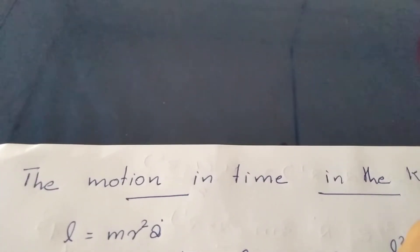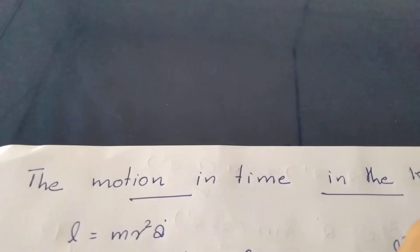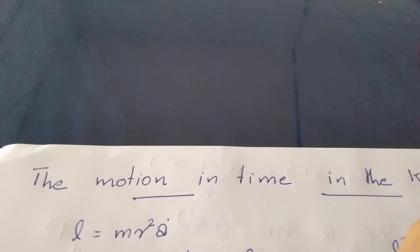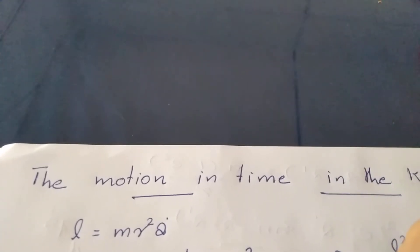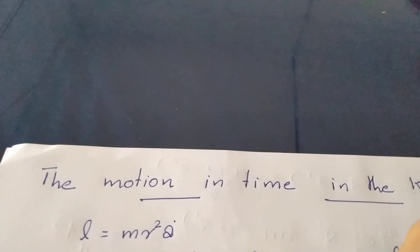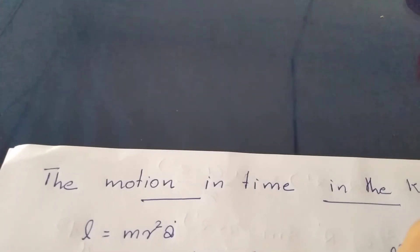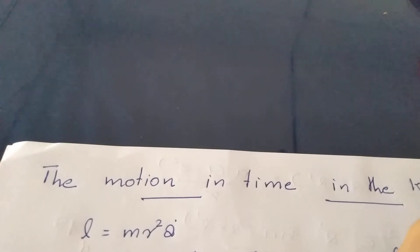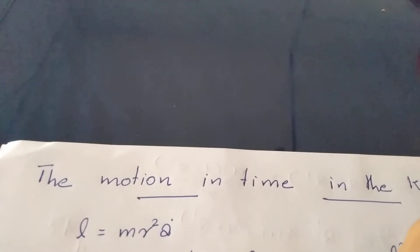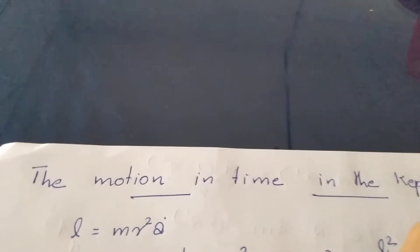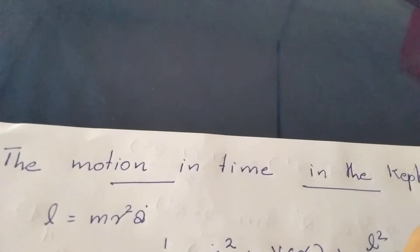We will consider the central inverse square force. We will say that F is equal to minus k by r squared, and V is equal to minus k by r squared. We will start with the angular momentum.